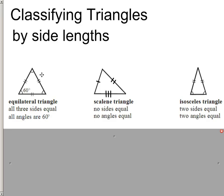Over here we have what's called a scalene triangle — that's where none of the side lengths are the same. One side has one tick mark, another has two, and another has three, so none of the sides are the same. That also means that no angles are equal. For an equilateral triangle, all three sides are the same and all three angles are equal at 60 degrees.